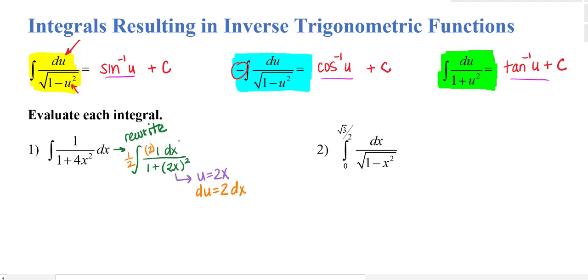Inside I needed 2 dx, that will become du. And the outside then had to be 1 half, because I can't change the value. So this will turn into 1 half times the antiderivative of du over 1 plus u squared now, which I do recognize to be 1 half inverse tangent of u plus c, and I know my u was 2x.